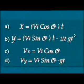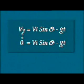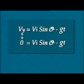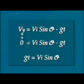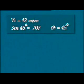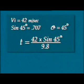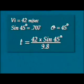At the highest point, the vertical velocity vy = 0. So: 0 = vi·sinθ − g·t, giving t = vi·sinθ / g. Let the initial velocity be 42 m/s and the angle of projection be 45°. Then t = 42 × sin45° / 9.8 = 42 × 0.707 / 9.8 = 3 seconds.